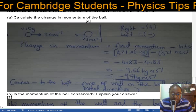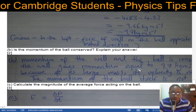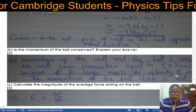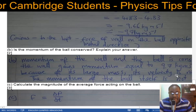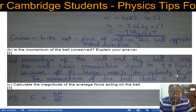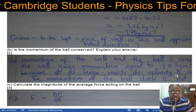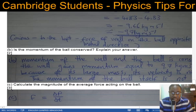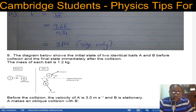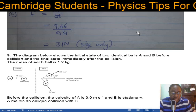Is the momentum of the ball conserved? The momentum of the wall-and-ball system is conserved. The wall gains momentum of 9.66 kg·m/s but because of its large mass its velocity is very small. The momentum of the ball alone is not conserved because it has changed direction. The magnitude of the average force equals delta P over delta t: 9.66 ÷ 0.31 = 31 newtons.